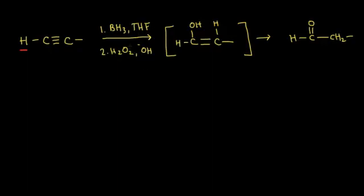In the second step, we're going to add hydrogen peroxide and hydroxide anion OH minus. We're going to get addition of water across our double bond. It's very similar to the last reaction. The difference here is the regiochemistry — this regiochemistry is actually anti-Markovnikov addition, meaning the OH is going to add to the least substituted carbon.